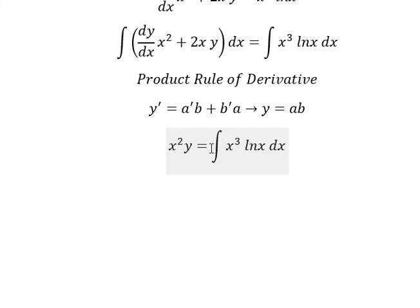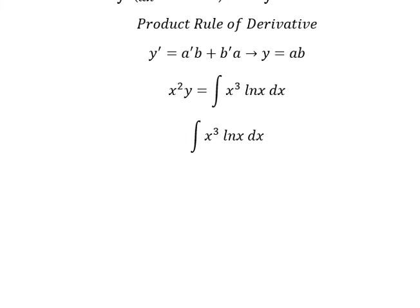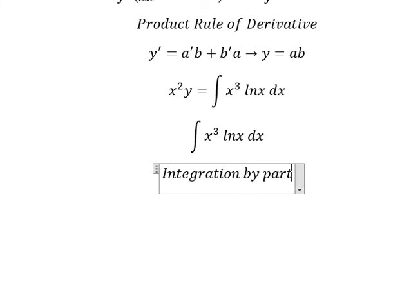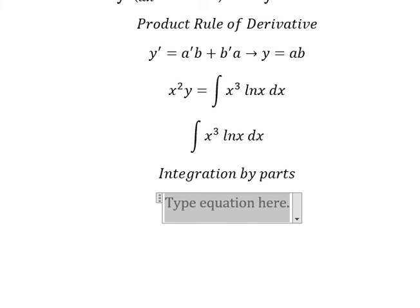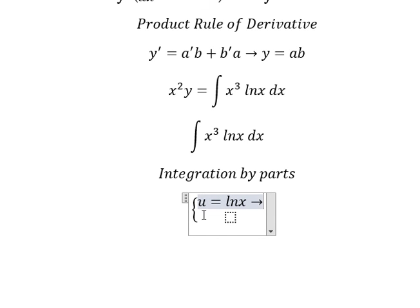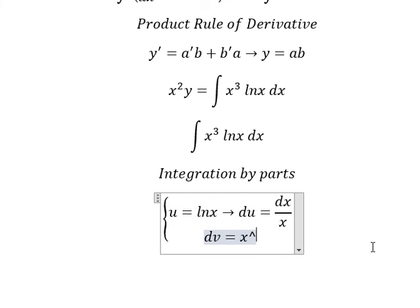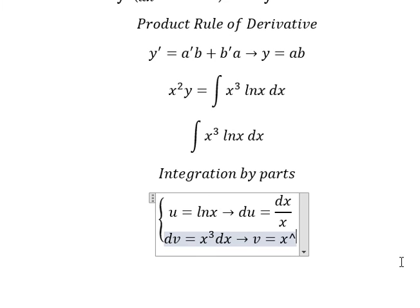Now we need to concentrate on the right side. We need to use integration by parts. So I will let u equal ln(x). Then we take the derivative of both sides. For dv we have x to the power of 3 dx. The integral of that gives v equals x to the power of 4 over 4.